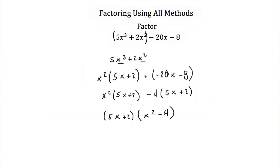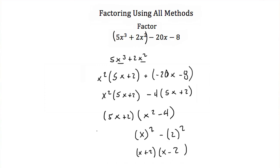I've successfully factored this by grouping. Now I look at my two factors: 5x plus 2 can't be factored further, but x squared minus 4 is a difference of squares. I have x squared minus 2 squared, so I can factor it into (x plus 2) times (x minus 2). My final factored form is (5x plus 2) times (x plus 2) times (x minus 2).